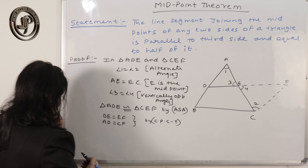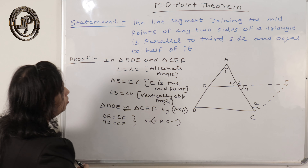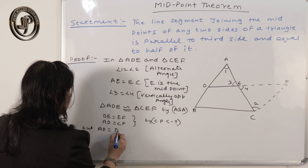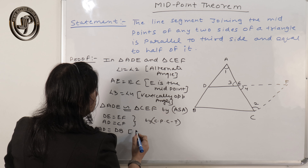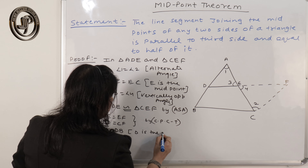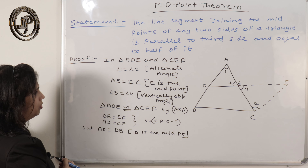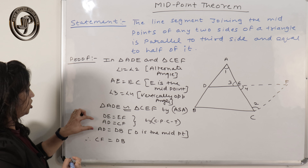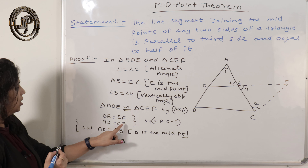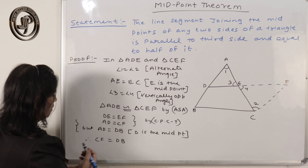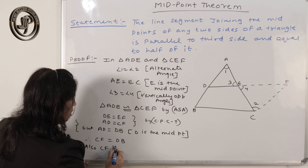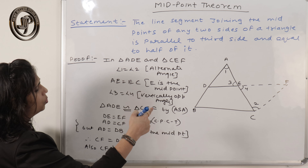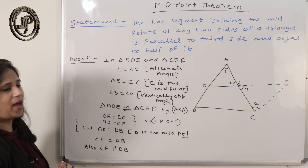By CPCT — corresponding parts of congruent triangles. Now AD equals CF, but AD also equals DB because D is the midpoint. So from both equations, CF equals DB. Also, CF is parallel to DB because CF is parallel to BA, as done in construction — so CF is also parallel to DB.